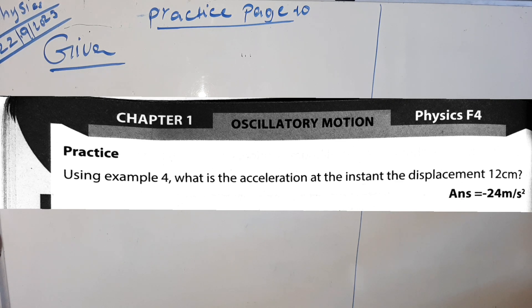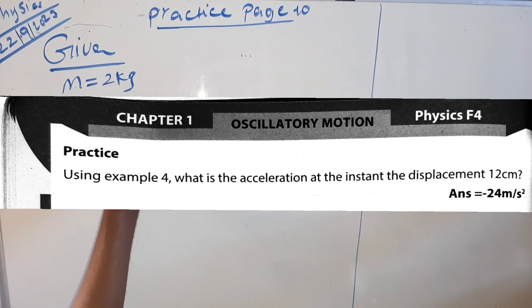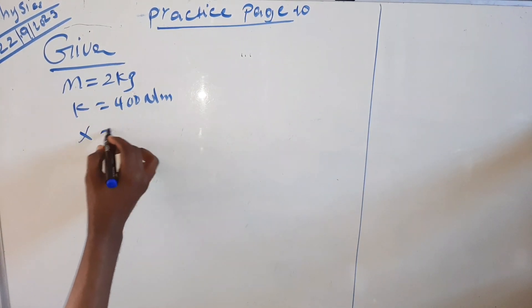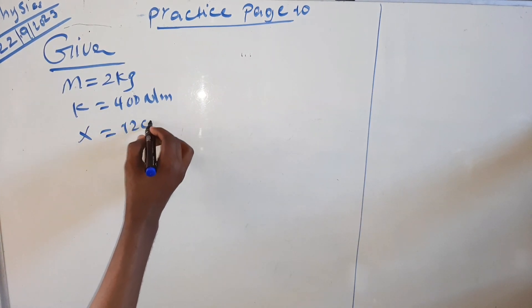Example 4 is the one that is not good but there is a lot we know. What is the acceleration? We have to do this. That is a small displacement. This is 12 cm. The mass is 2 kg and this is 400 N/m.